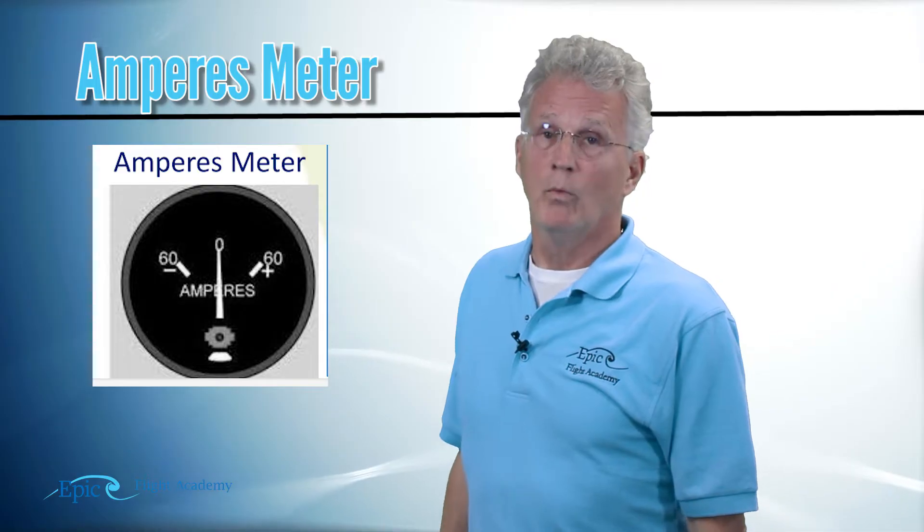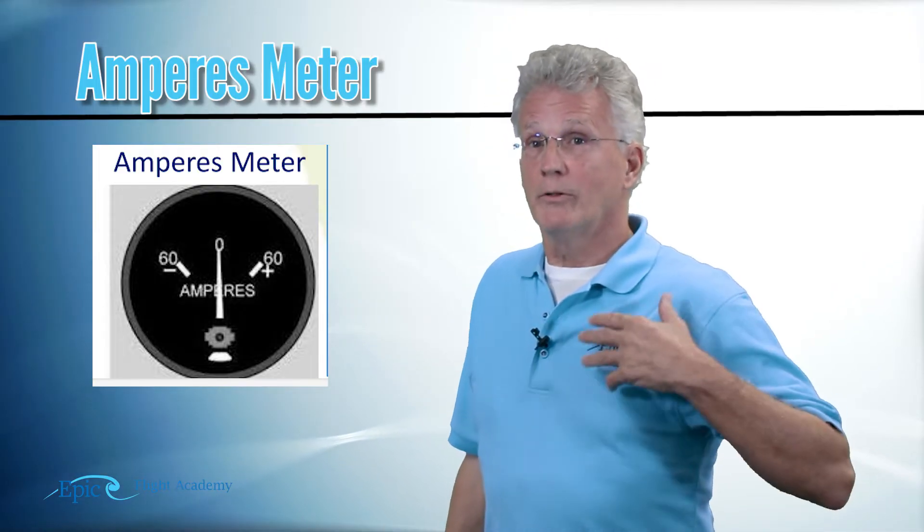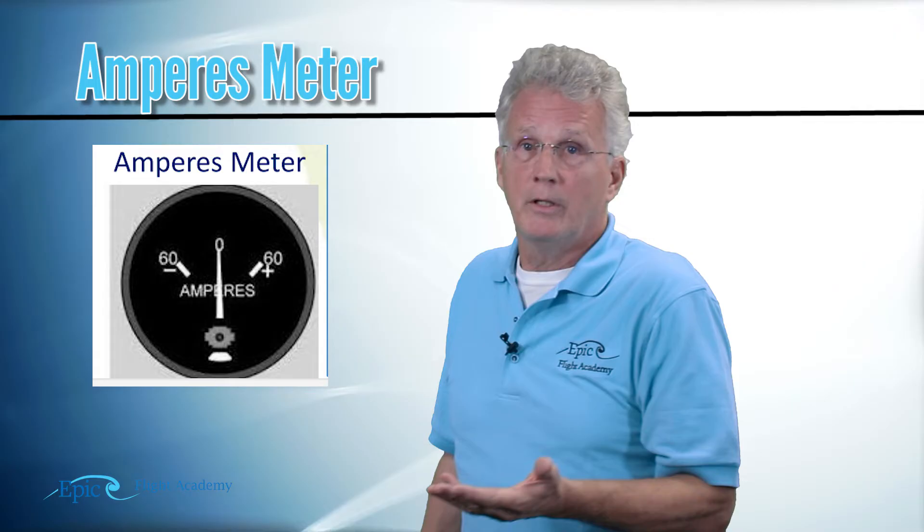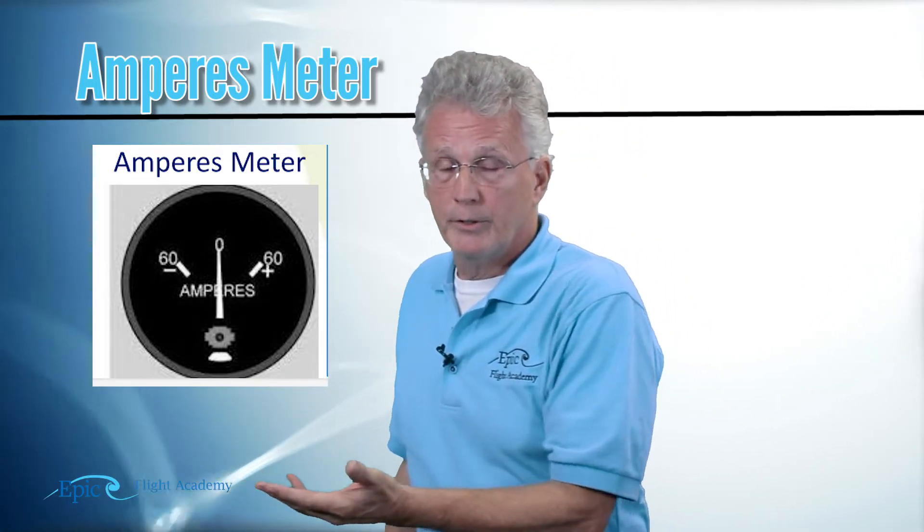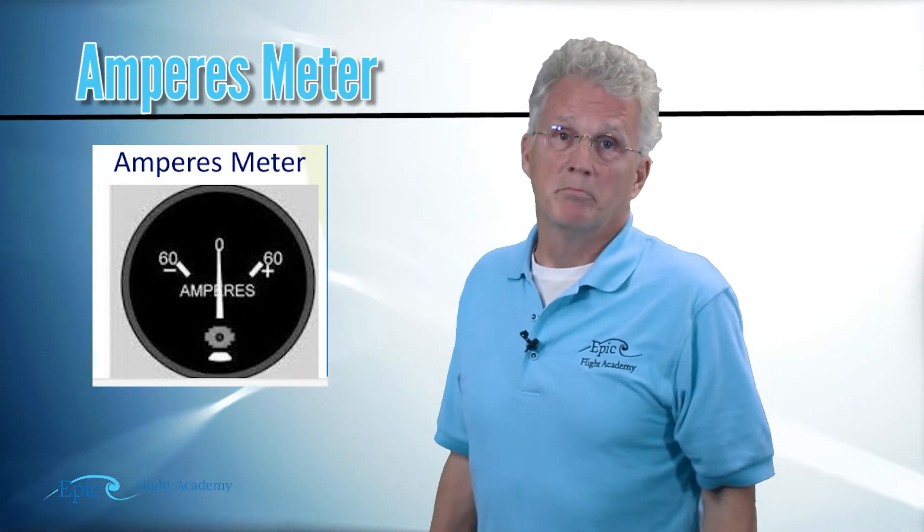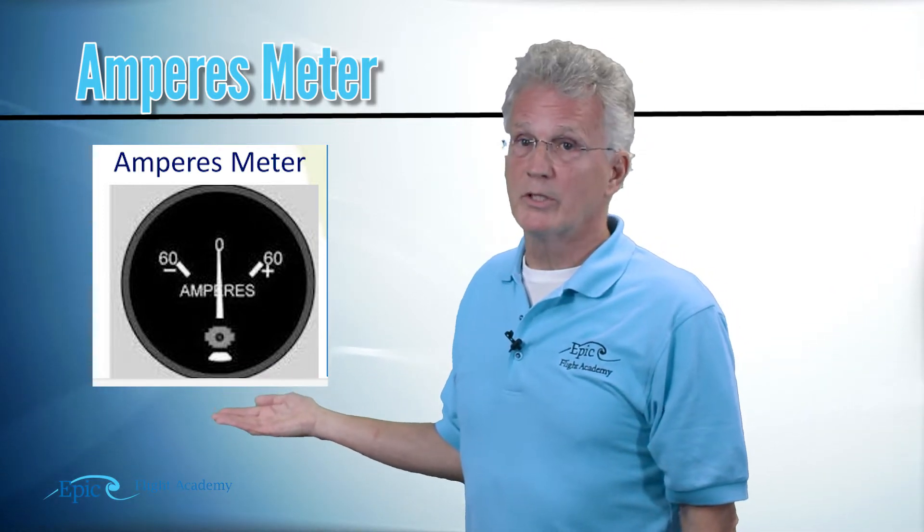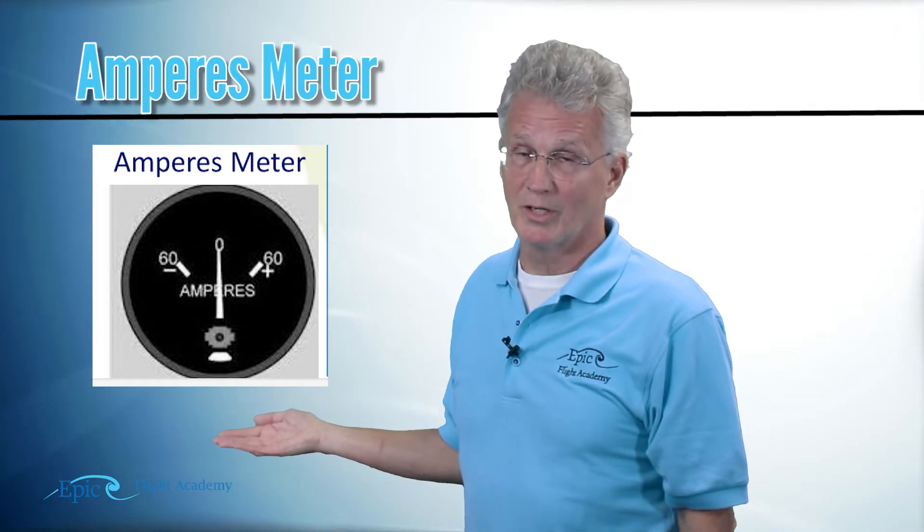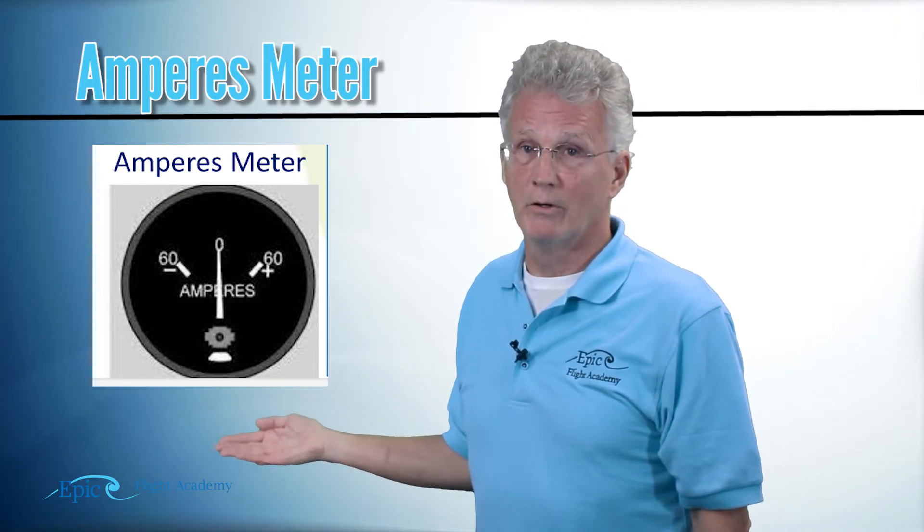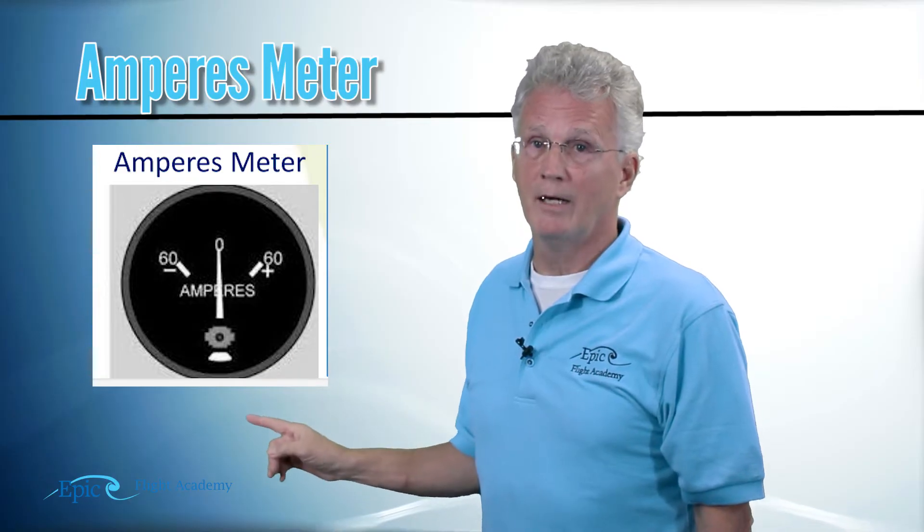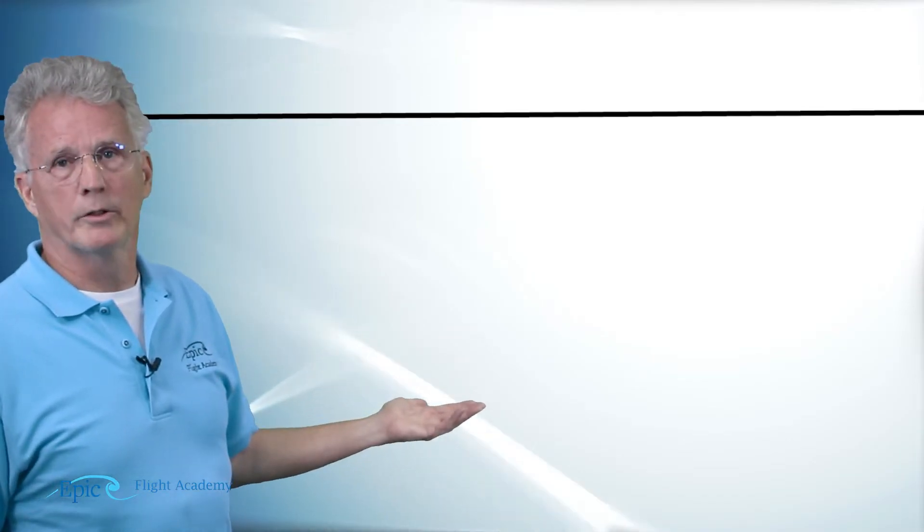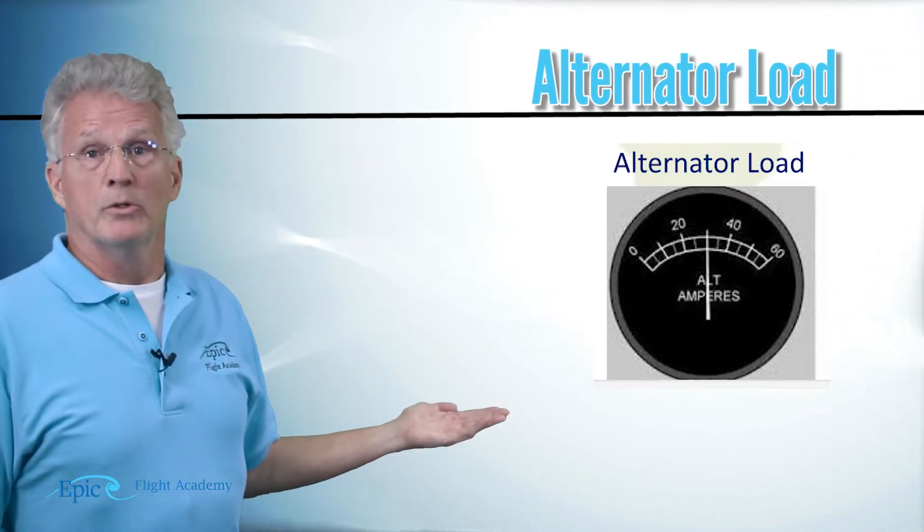If you take a look at this amp meter, you see the needle straight up and down at zero. What that means is the alternator is providing all of the electrical amperage that my airplane is asking for. This ampere meter goes from plus 60 to minus 60. If it's at zero, it means it's providing the amperage that the system is asking for. Now I don't know exactly how much that is.